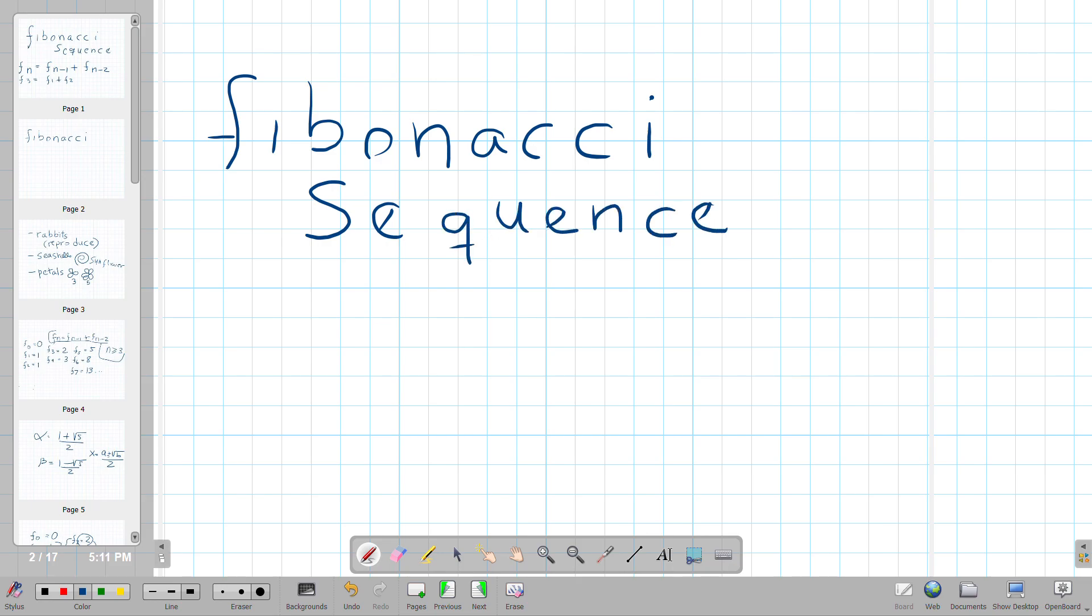The Fibonacci sequence is attributed to an Italian mathematician from the 1200s, even though it's been thought, and reasonably so, that it was in use before he came up with it, or it was named after him. And it goes like this.